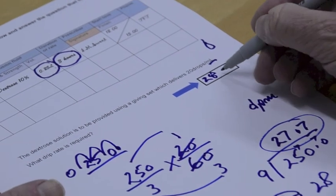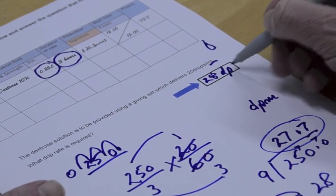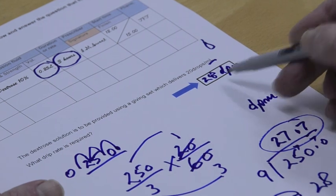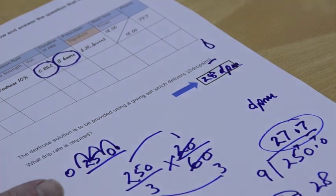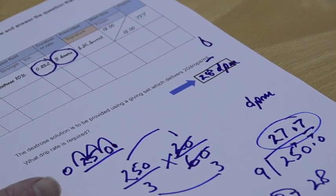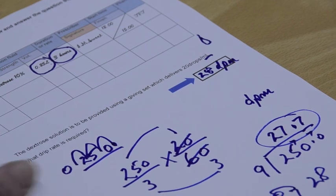28 drops per minute. Always a whole number. Never bits of drips. And there we are. That's our first drip calculation.